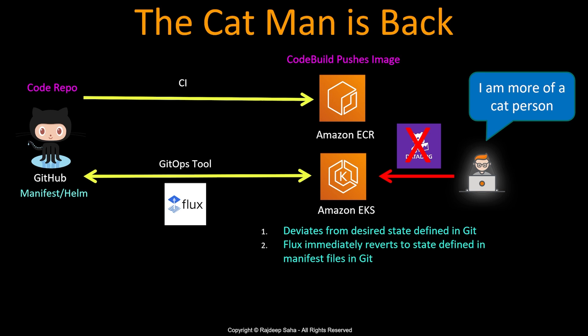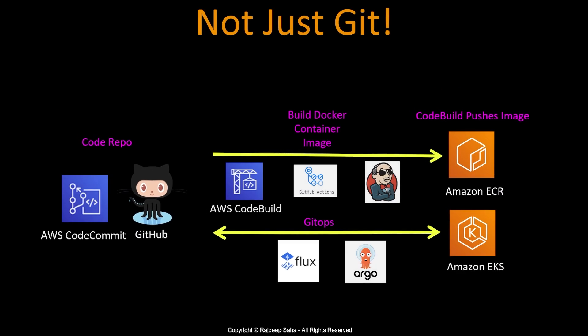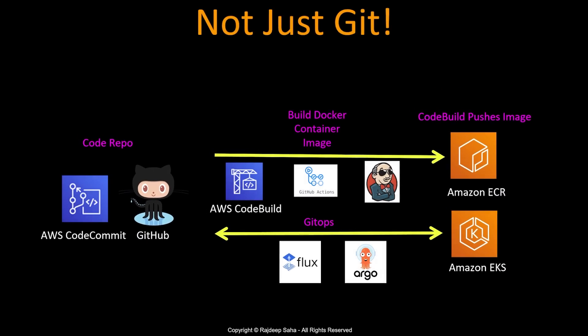The state of the cluster is defined by whatever is defined in Git — that's why we say Git becomes the single source of truth. It sends alerts to the appropriate team with audit trails, and this team removes unnecessary access from the cat man so that only GitOps can make changes — and maybe in the process convinces him that dogs are cool too.